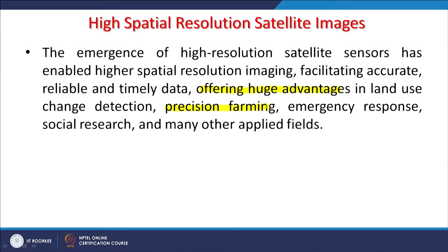Precision farming is a new development, including in India, where not only high spatial resolution satellite images but also drones are being used along with GNSS technology for giving fertilizers or spreading insecticides and pesticides. In emergency responses — like earthquakes, landslides, or flooding — pinpointing the locations where people have been affected or houses damaged, and providing emergency services to such locations, is only possible through high spatial resolution images.